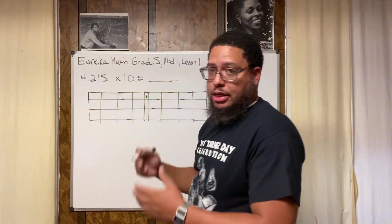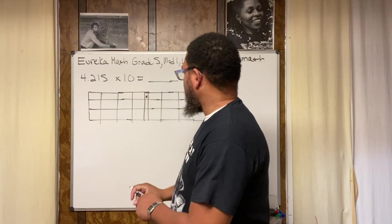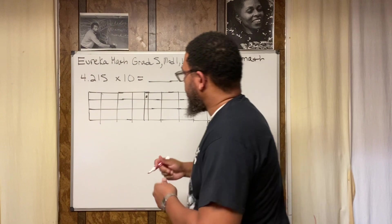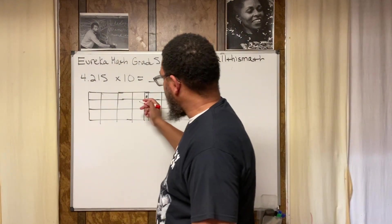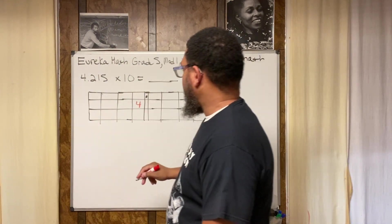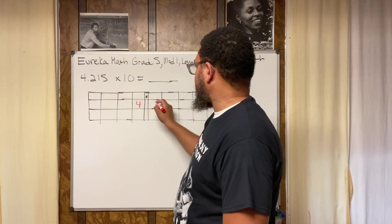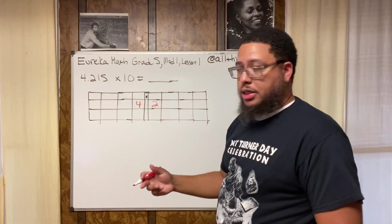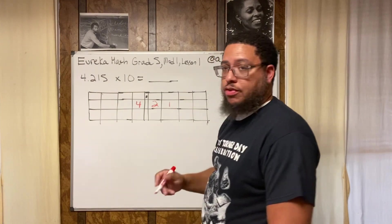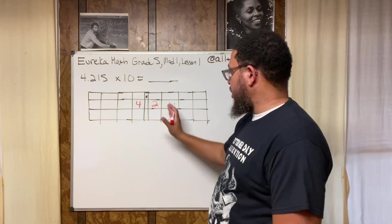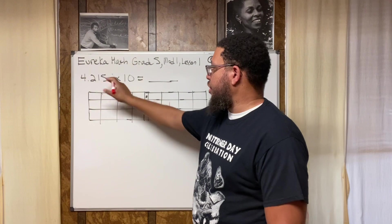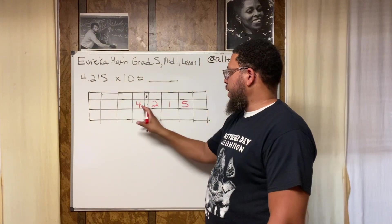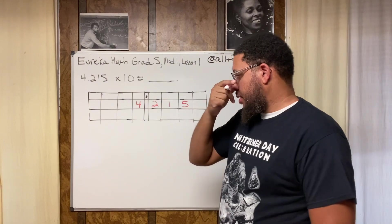They want you to write the number in not at this top row but in this middle row right here, and put everything in its proper place. So the 4 is in the ones place. Let me switch the color up. The 4 is going to go in the ones place, which is right here. And then the 2 is going to go in the tenths place, which is right here. The 1 is going to go in the hundredths place. Make sure you put that TH on the end of hundred, because it's the hundredths place. The 5 is going to go in the thousandths place, which is right here. So we got 4.215.